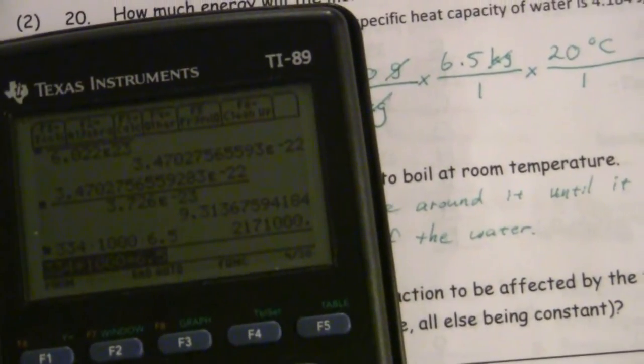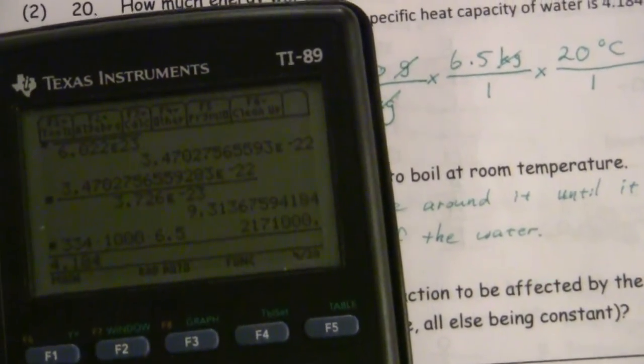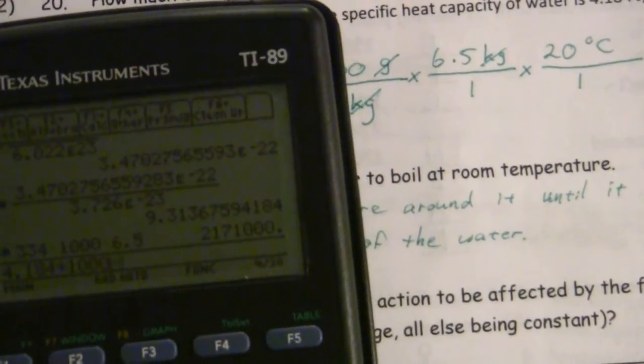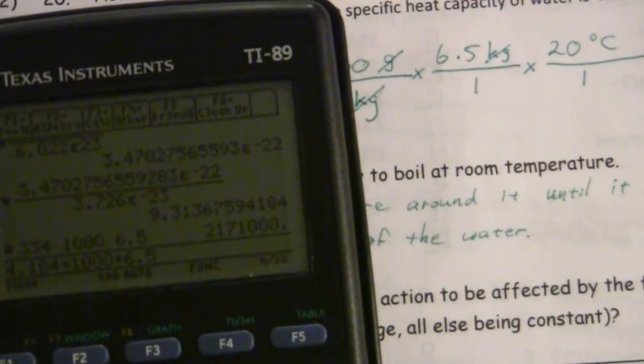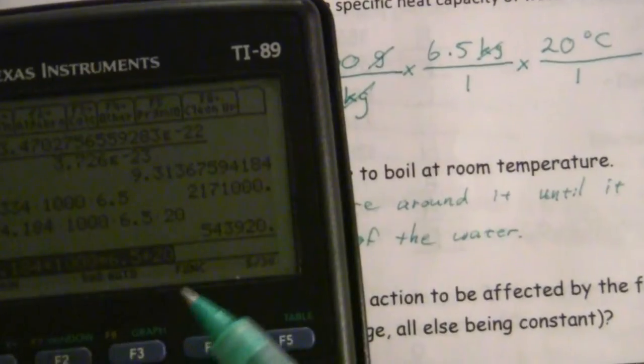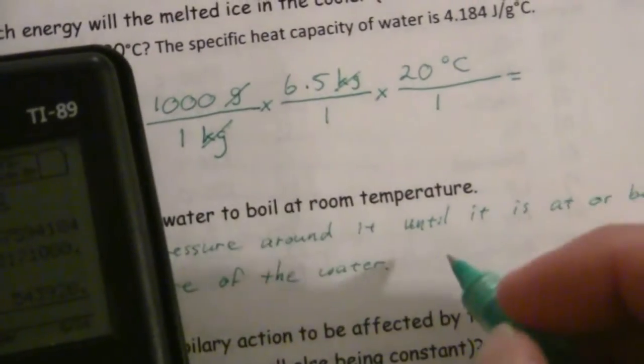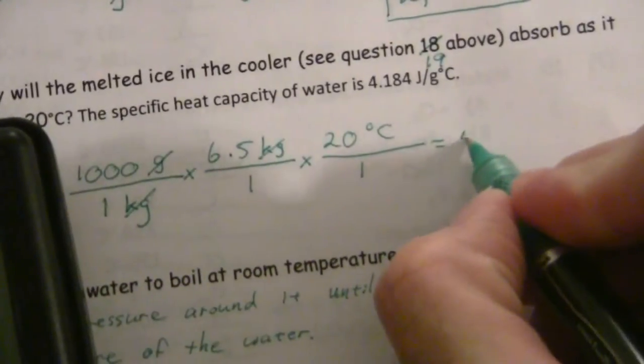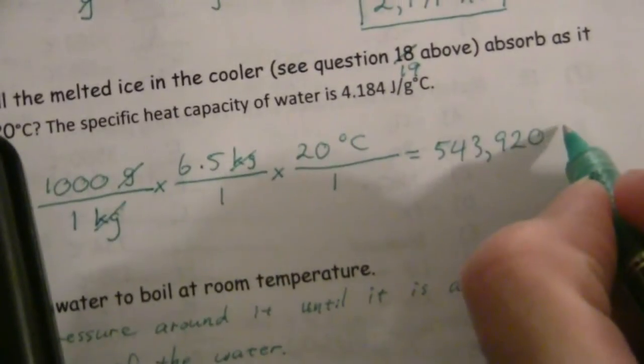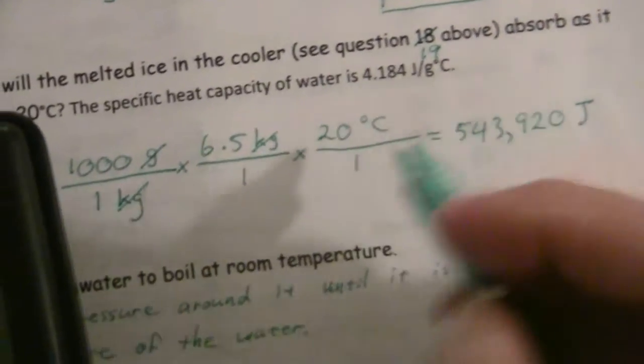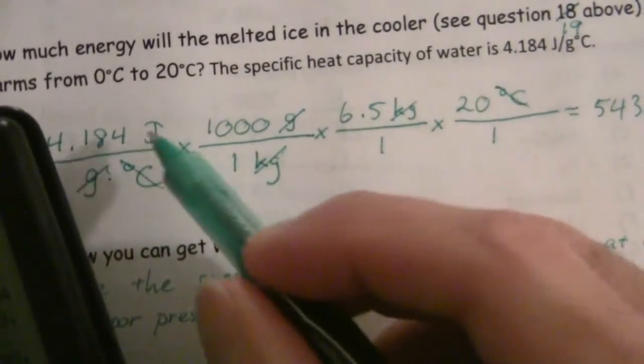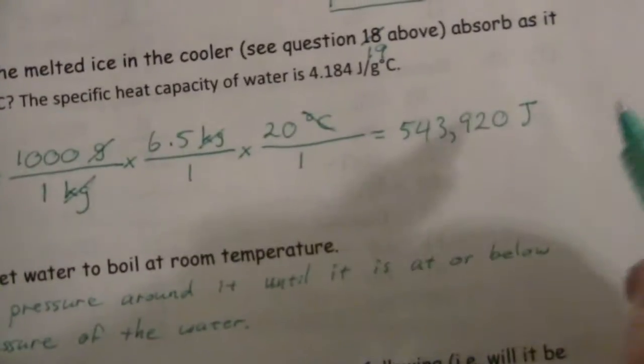So, 4.184 times 1,000 times 6.5 times 20. So we have 543,920 joules. That's what's left. My degree C cancels and left with joules.